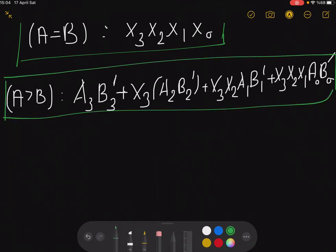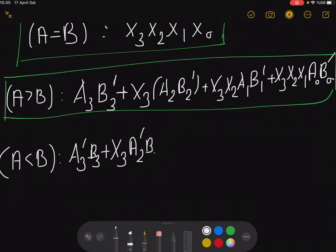In a pretty similar fashion we do the same thing for the A smaller than B check. What you have here will be A₃ not B₃, or if those digits are equal then X₃ and then it would be A₂ not B₂. Or if X₃ and X₂, those digits are equal, then we go ahead and check for this condition A₁ not B₁.